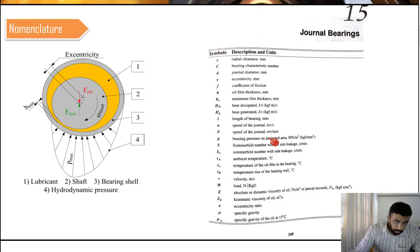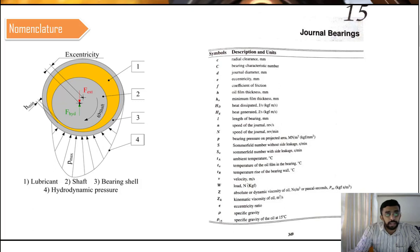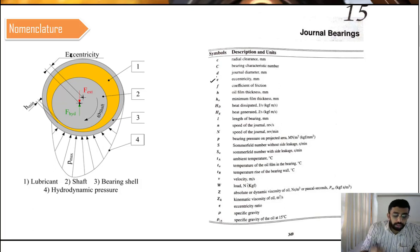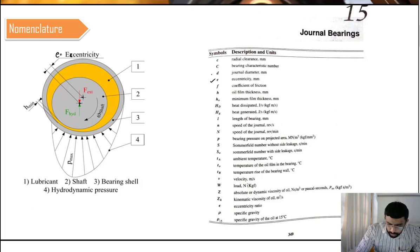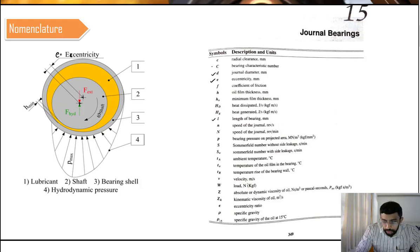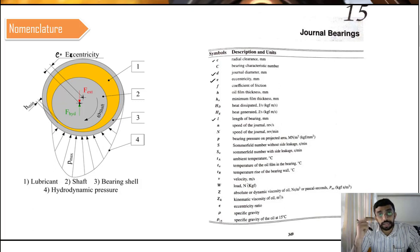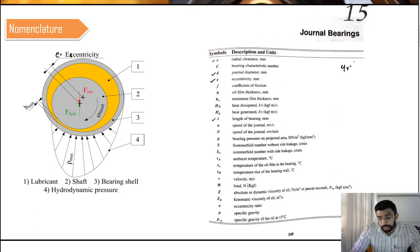In the journal bearing, the shaft center is located at some distance from the center of the bearing, and that difference is called the eccentricity, expressed by the letter e. The diameter of the shaft is small d, and the length of the shaft is l. Capital C is the bearing characteristic number and small c is the radial clearance. c/r is the radial clearance ratio and c/d is the diameter clearance ratio.